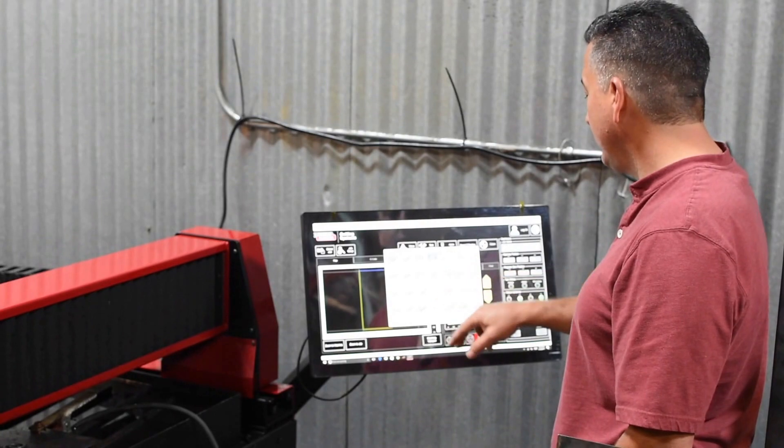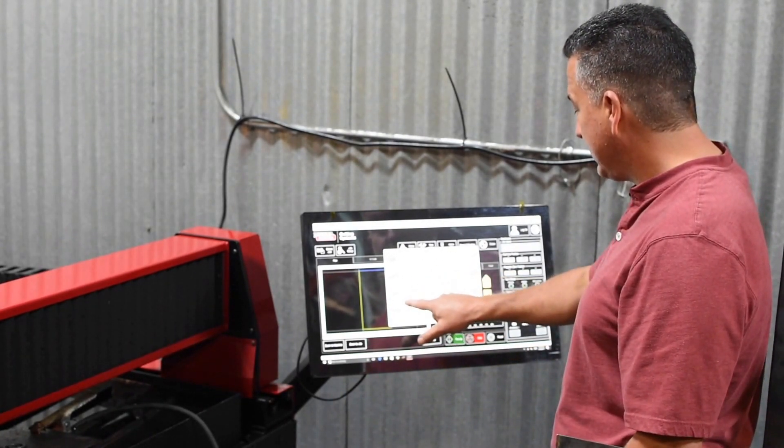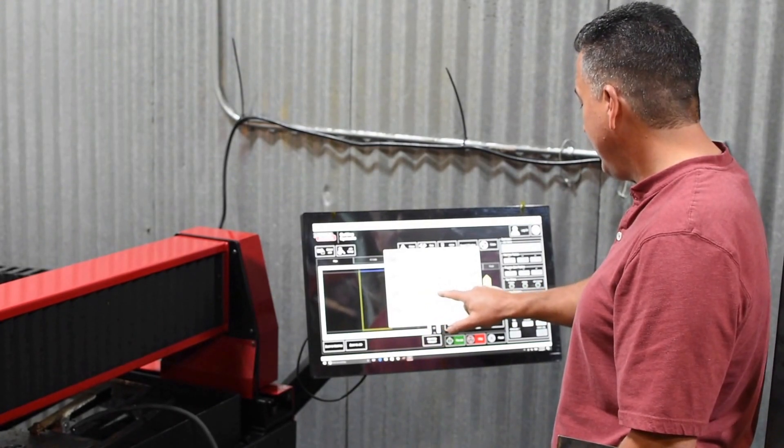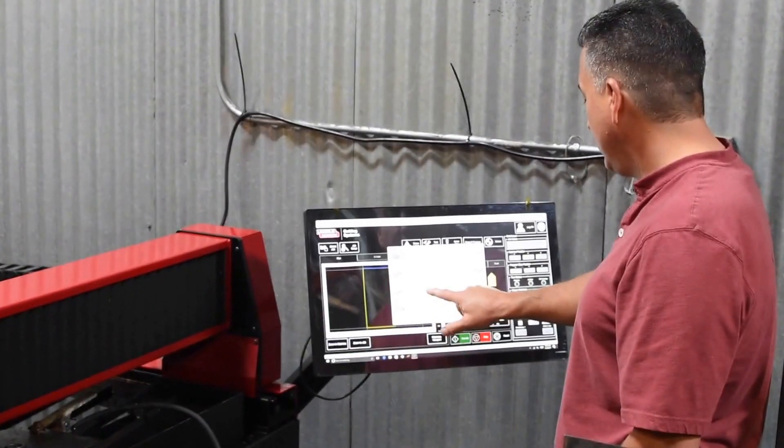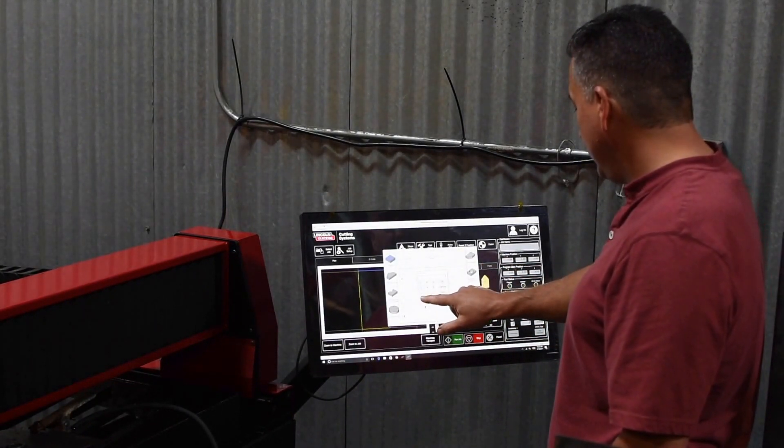So let's say we want to do a round flange. Then we can set the size. So let's say we want to do a 5 inch round flange with a 1.625 center. Feed rate 100.